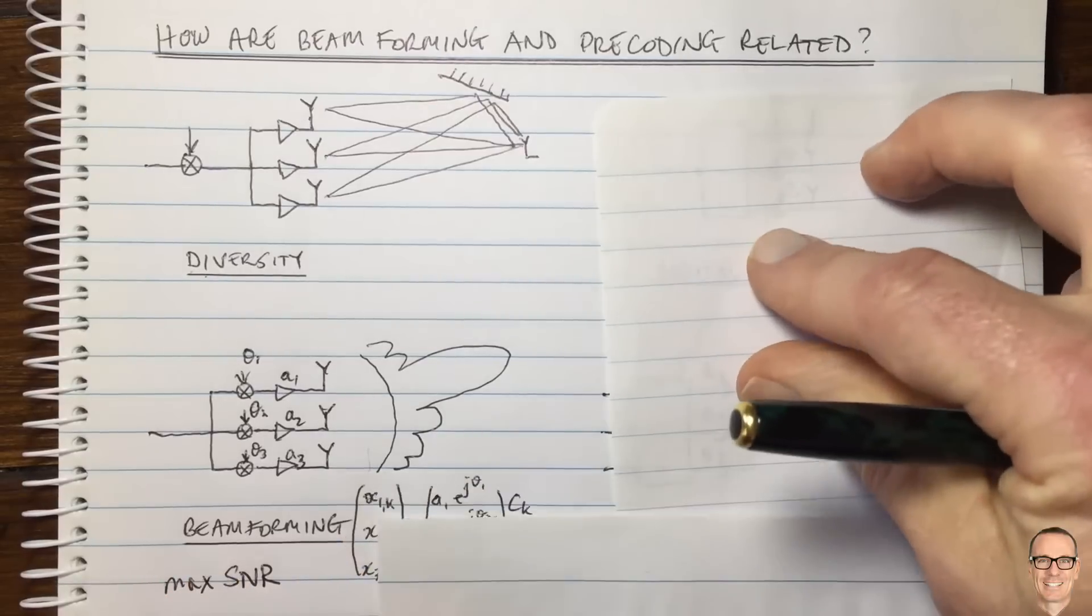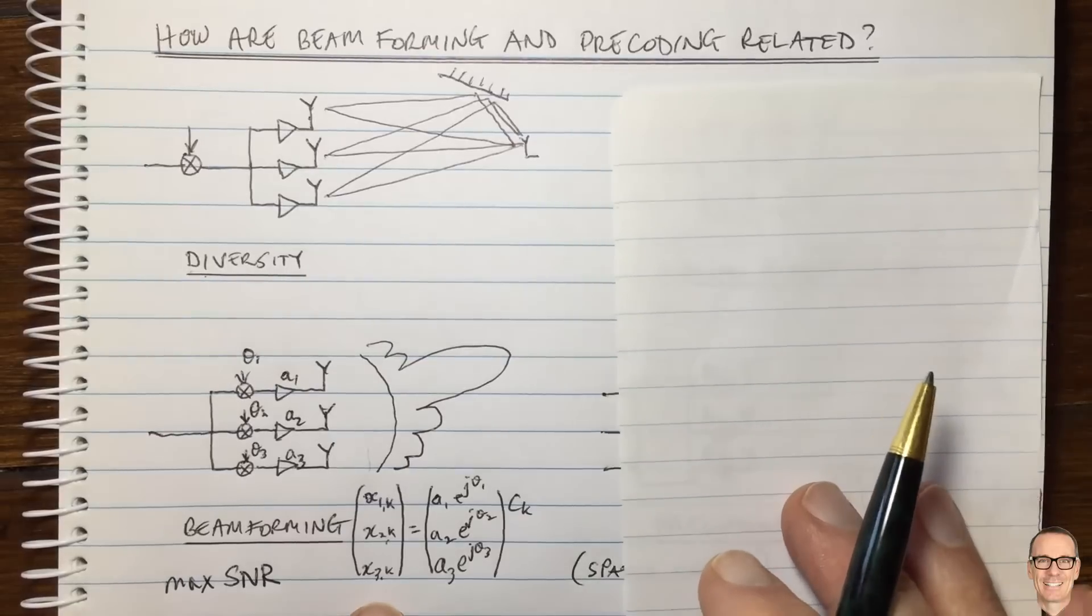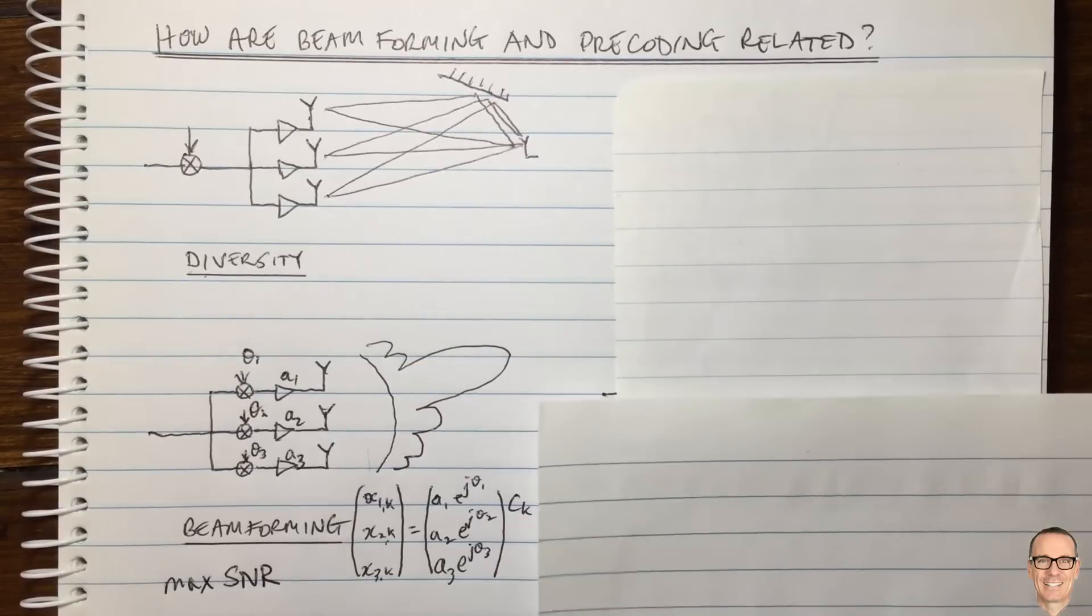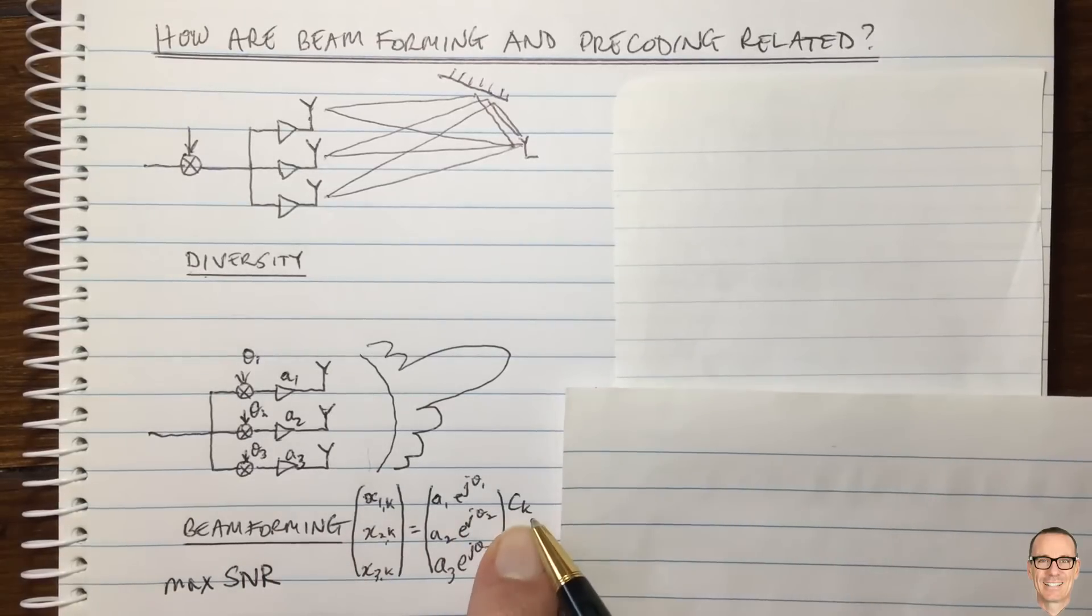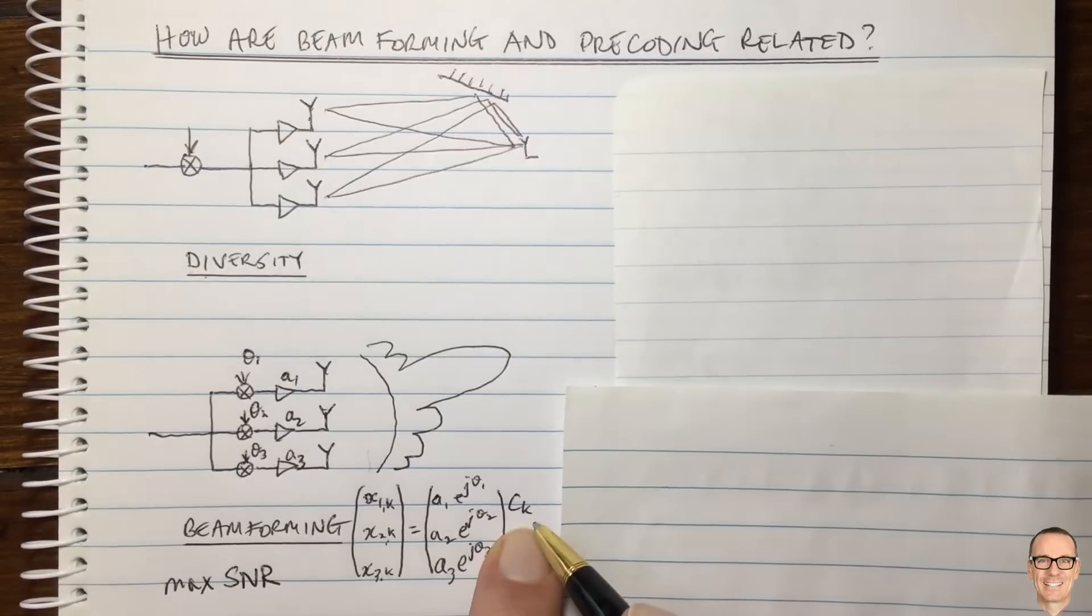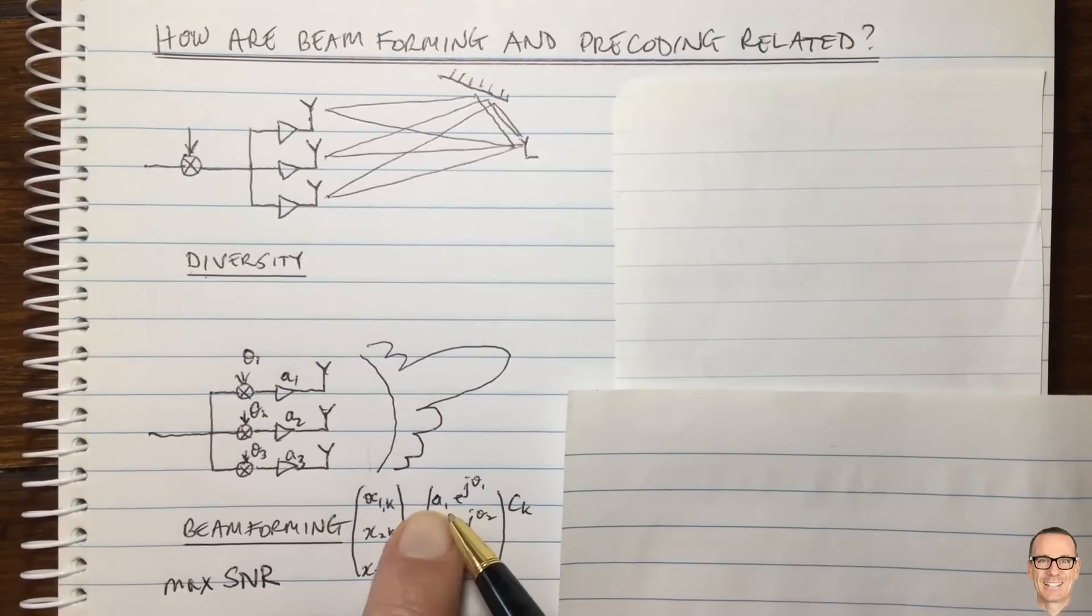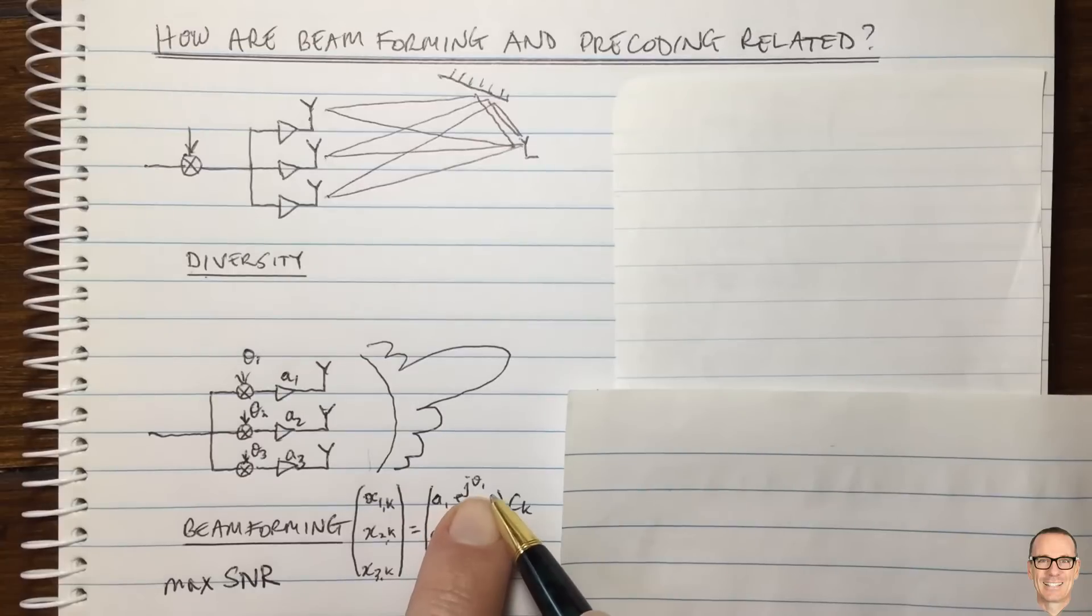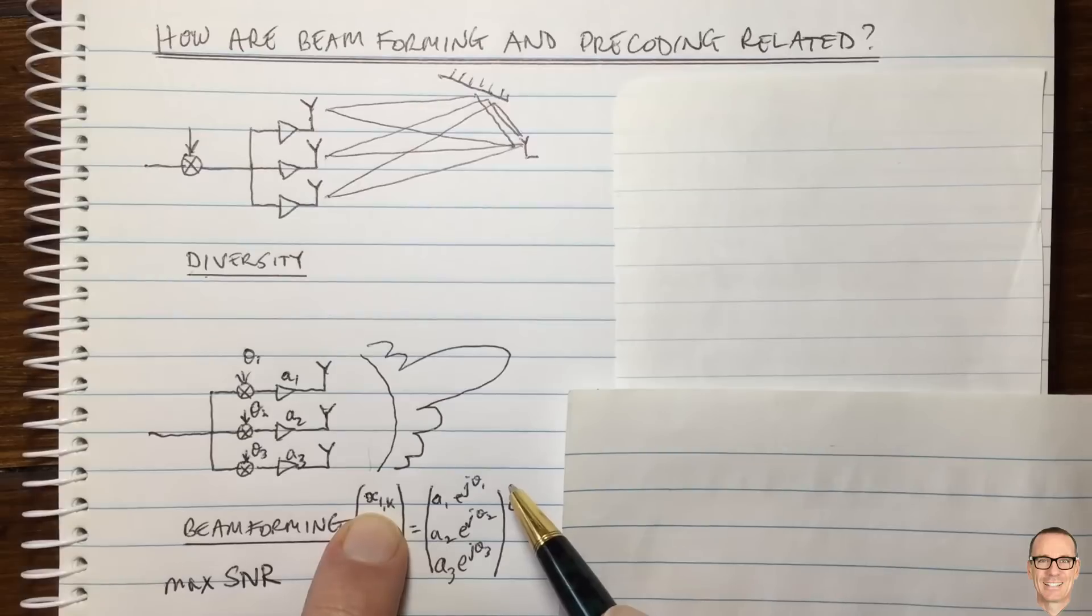And we can write an equation for this. Here's an equation which exactly represents what's happening in the analog case. We've got our complex value from our constellation, for example from a QAM constellation, that's C_K, and K is the time. So this is a transmit symbol. It's going to be multiplied by a complex number which has an amplitude A1 and a phase theta 1, and go off the first antenna as X1 at time K.